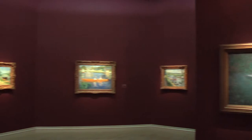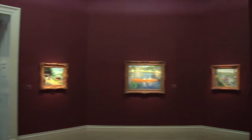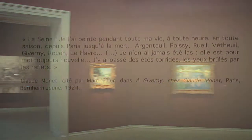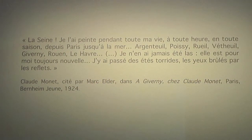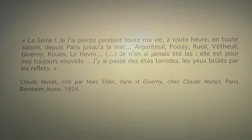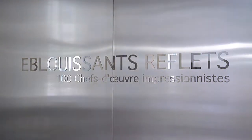Monet dit : « La Seine, je l'ai peinte en toute saison — l'été, l'automne et l'hiver — les yeux brûlés par les reflets. » D'où l'idée de ce mot d'éblouis sans reflet, comme si le peintre perdait la vue environnée de ses mille reflets scintillants.